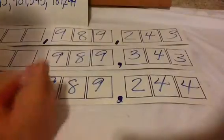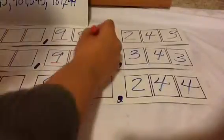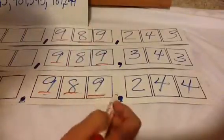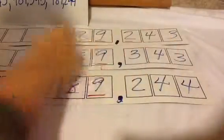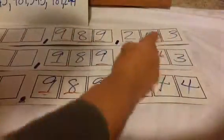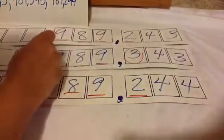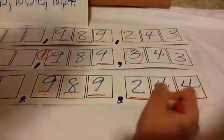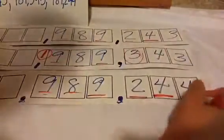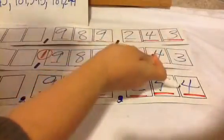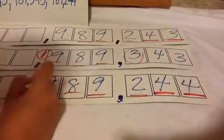Let's look at the next set of numbers. Starting from the hundred-thousandths place — all the same, all the same, all the same. And then over here, these two are the same, but this one is larger, so they wanted greatest to least, so that's going to be first. Now between these two, I have to go on to the next place value — same — and then over here, this one is less than this one, so this one is going to be next greatest, and this will be the least.